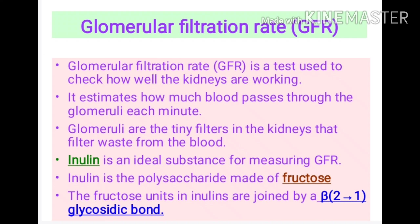Polysaccharides are carbohydrates made up of several monosaccharide units. Monosaccharides are simple carbohydrates which cannot be further hydrolyzed into simpler units. The polysaccharide inulin is made up of the monosaccharide fructose, held together by a glycosidic bond known as beta-2,1 glycosidic bond. Inulin can also be found in the root tuber of dahlia. The correct answer is option B: inulin.